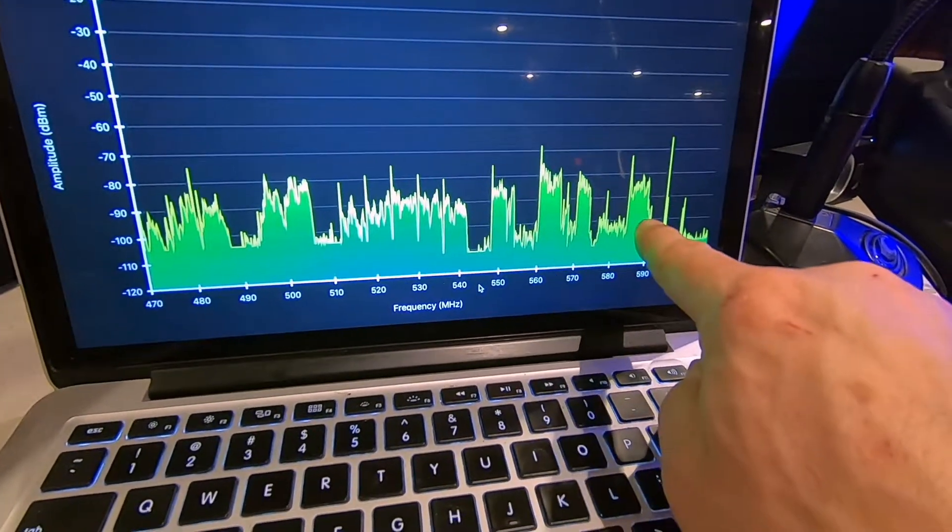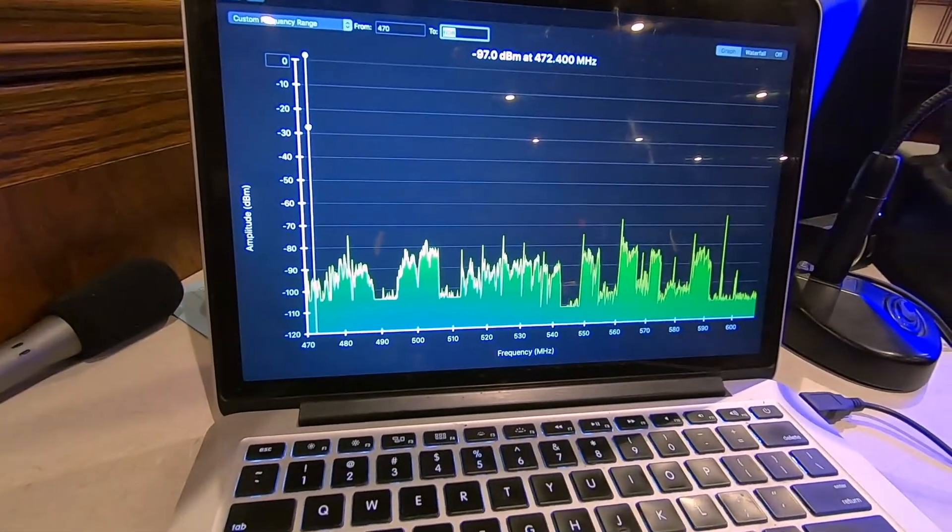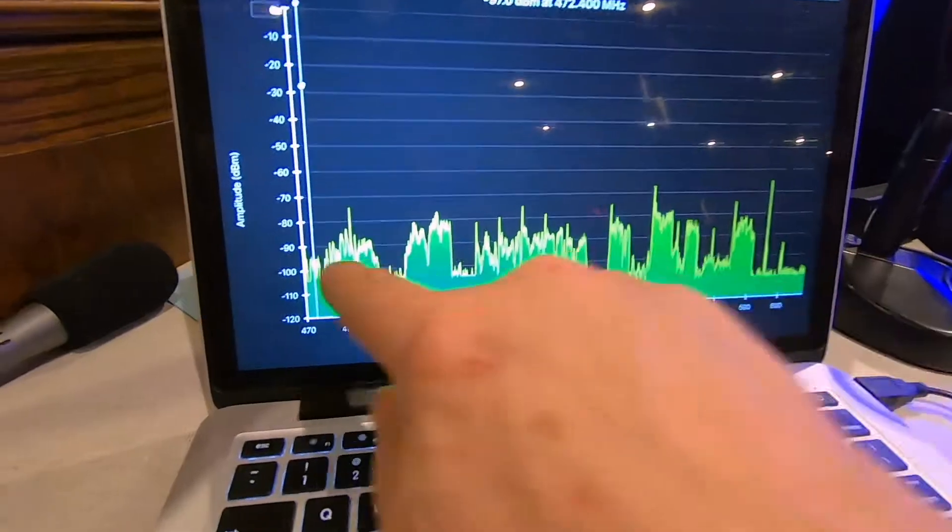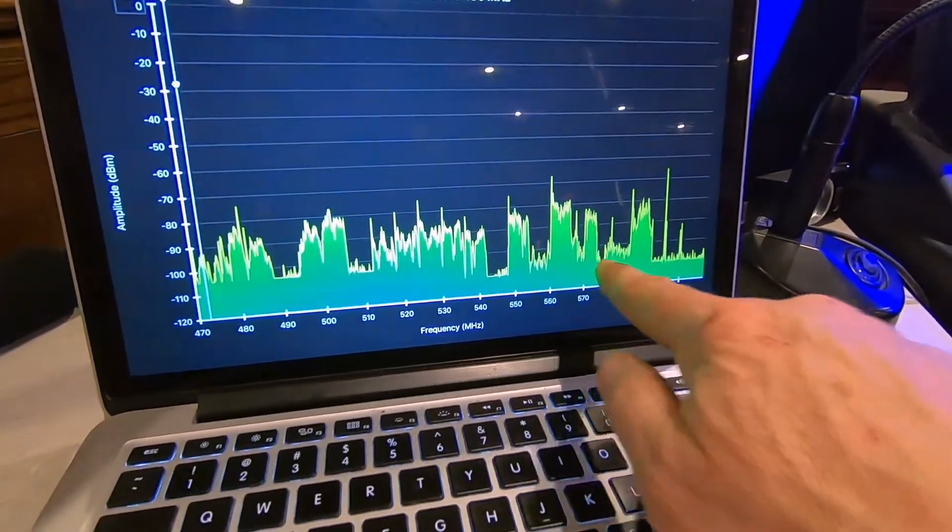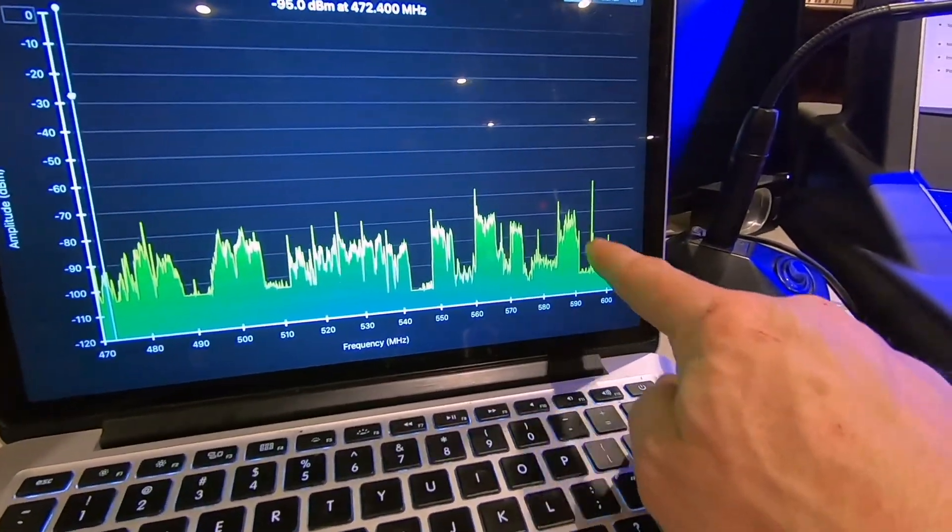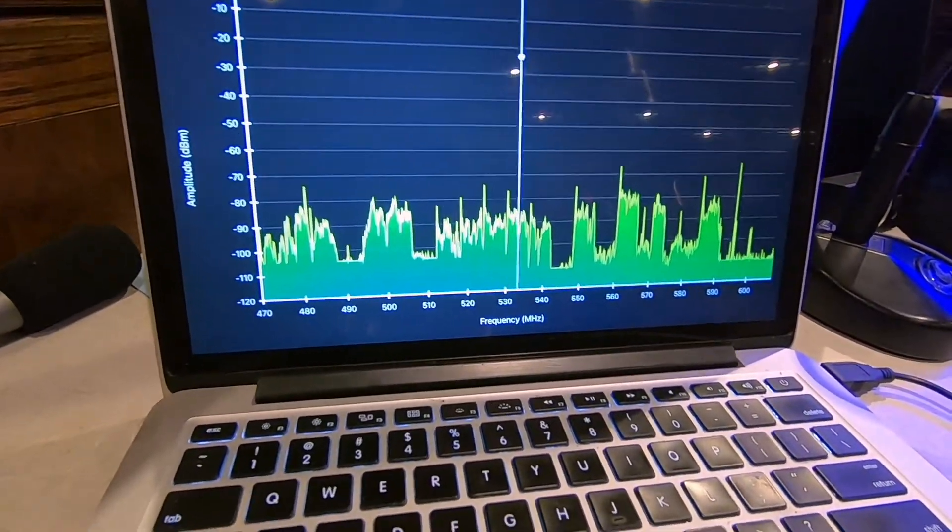That's what a TV station looks like. TV has 6 megahertz to work with. So in the Oklahoma City market, from 470 to 608, we have 13 TV stations. Plus, there's a few other transmissions as well, and I don't know what those are.